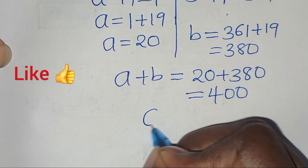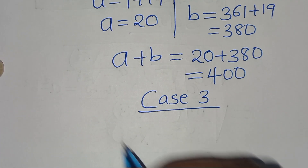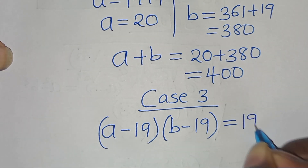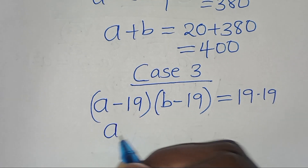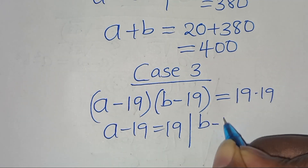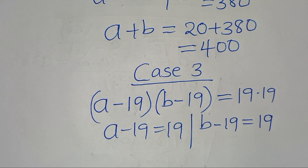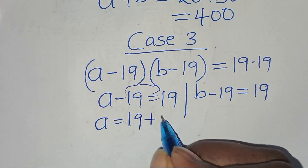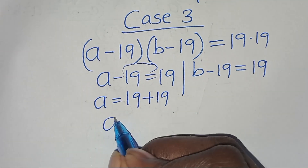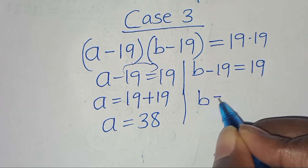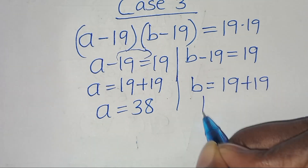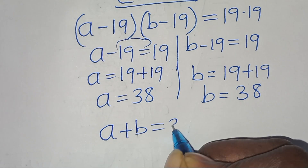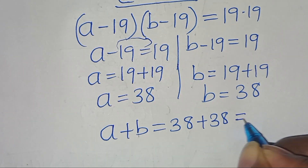For Case 3: (a minus 19)(b minus 19) equals 19 times 19. So a minus 19 equals 19, giving a equals 38, and b minus 19 equals 19, giving b equals 38. Therefore a plus b equals 38 plus 38, which equals 76.